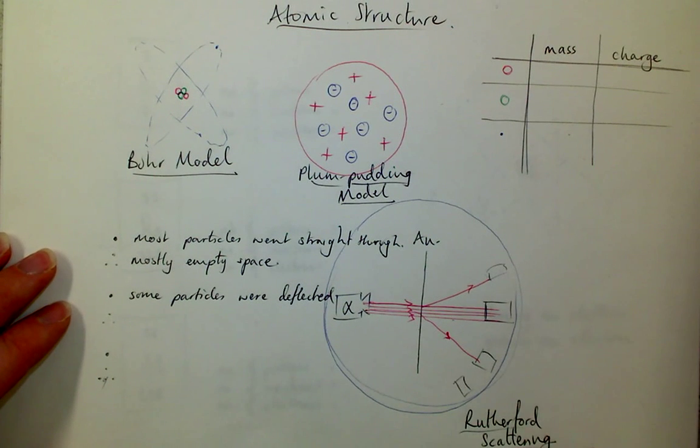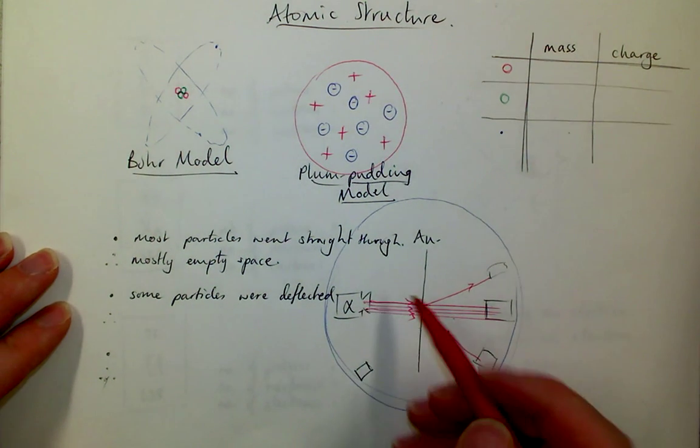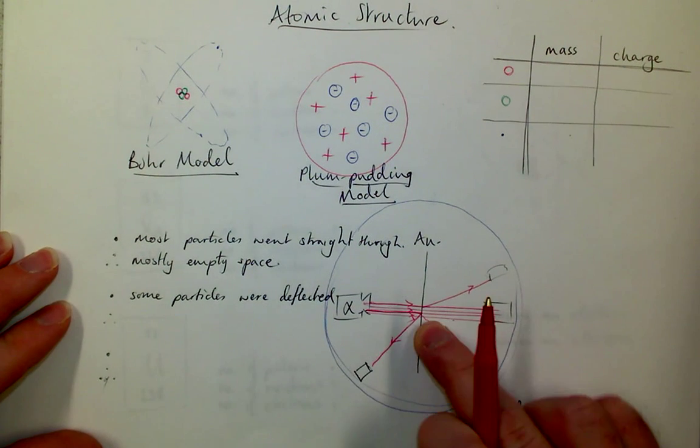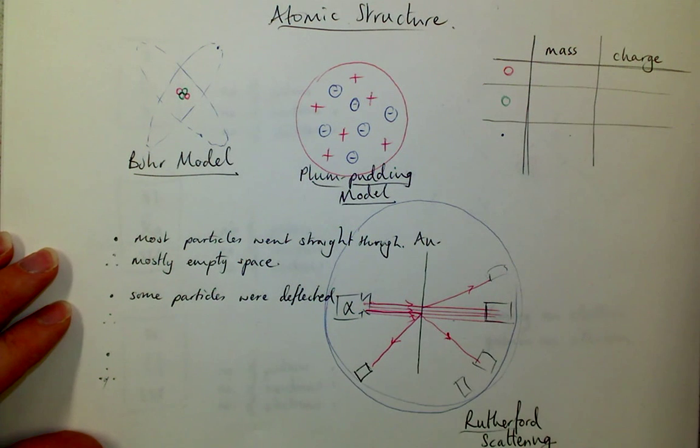Now given that he's seen this and he still hasn't accounted for all of these particles, he was quite amazed when he moved his detector around to this side. And he saw that very, very few actually were deflected through very large angles and back the direction they came.